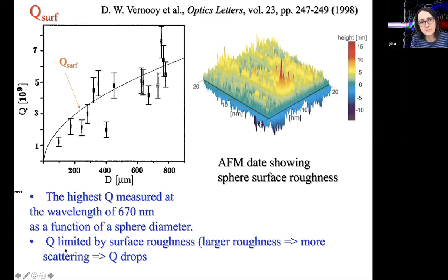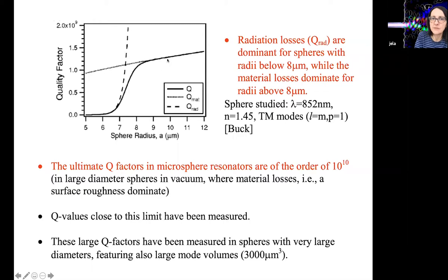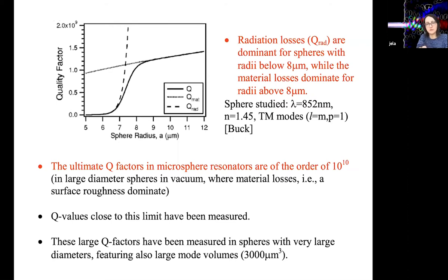When you combine everything — radiative loss and material loss — the smaller of the two always limits the Q factor. If you plot radiative loss and material loss for P equal to one, L equal to M modes at 852 nm, the radiative loss curve looks like the dashed curve and material loss looks like the dotted curve. For radii below about eight microns, radiative loss dominates; for radii greater than eight microns, material loss dominates. For the highest Q factor measurements, those were spheres with very large radii — tens or hundreds of microns — where radiative loss is not limiting.